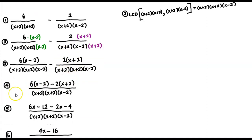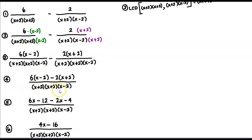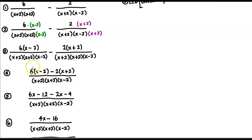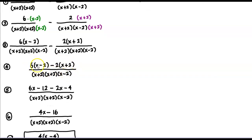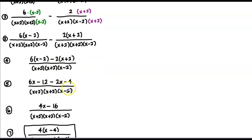In step 4, we combine into one fraction: 6 times x minus 2, minus 2 times x plus 2. We distribute: 6 times x is 6x, 6 times minus 2 is minus 12, minus 2 times x is minus 2x, and minus 2 times plus 2 is minus 4.